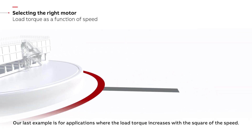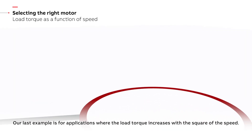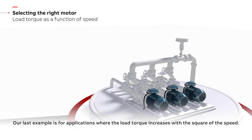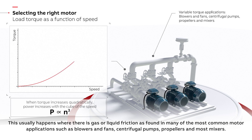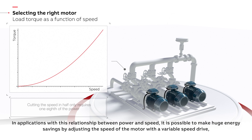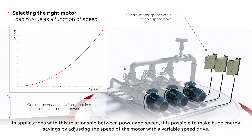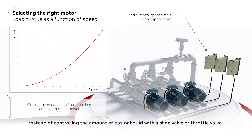Our last example is for applications where the load torque increases with the square of the speed. This usually happens where there is gas or liquid friction, as found in many of the most common motor applications such as blowers and fans, centrifugal pumps, propellers and most mixers. In applications with this relationship between power and speed, it is possible to make huge energy savings by adjusting the speed of the motor with a variable speed drive instead of controlling the amount of gas or liquid with a slide valve or throttle valve.